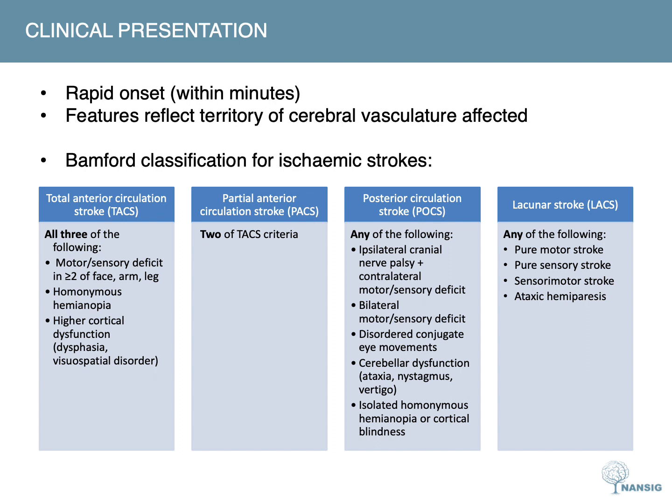Posterior circulation strokes involve the territory of the posterior circulation, such as the cerebellum and brainstem. These are indicated when any of the following are present: ipsilateral cranial nerve palsy combined with contralateral motor or sensory deficit; bilateral motor or sensory deficit; disordered conjugate eye movements; cerebellar dysfunction, which includes ataxia, nystagmus and vertigo; and isolated homonymous hemianopia or cortical blindness.